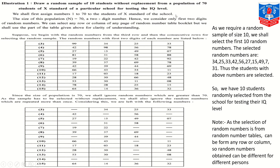First, we have to assign the numbers 1 to 70 to the students of standard 10th, which we have already done. Now, the size of the population — denoted by capital N — is 70, which is a two-digit number. Hence, we consider only the first two digits of the random numbers. We can select any row or column of any page of the random number table book.